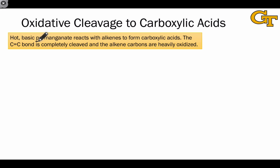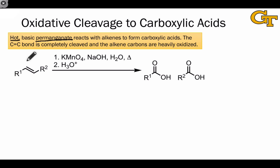For example, potassium permanganate under basic conditions at high temperatures reacts with alkenes to form carboxylic acids. This is an extreme example of oxidation, since we're replacing three bonds to carbon or hydrogen at each of the alkene carbons with three bonds to oxygen in the products.